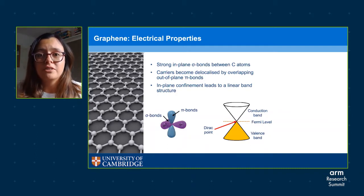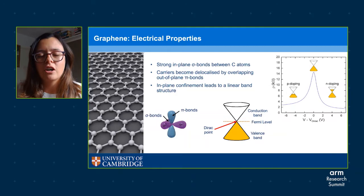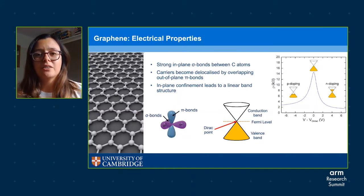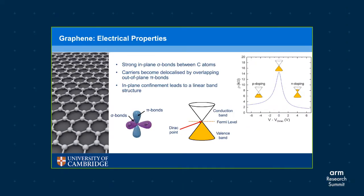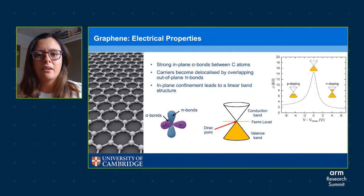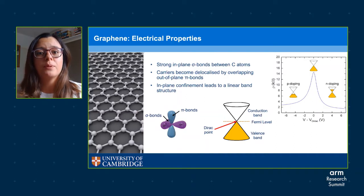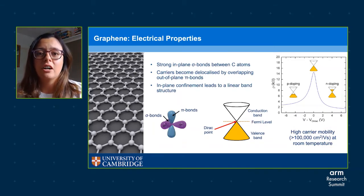When we apply an electric field to graphene, the position of the Fermi level changes and we get a resistance curve. The resistance is maximum when the Fermi level is at the Dirac point, because the density of states shrinks so there are very few carriers remaining. A positive voltage drops the resistance and moves the Fermi level into the conduction band, making graphene n-doped with majority electron carriers. A negative voltage similarly decreases resistance but moves the Fermi level into the valence band, making graphene p-doped with majority hole carriers. This ambipolarity and symmetry around the Dirac point is a direct result of the linear band structure. Importantly for high-speed optoelectronic applications, graphene has a very high mobility which can far exceed 100,000 cm²/V·s at room temperature.